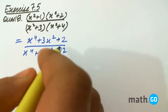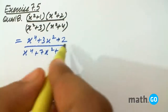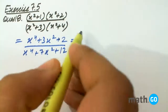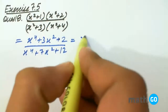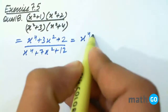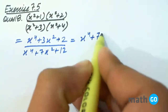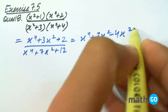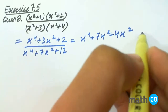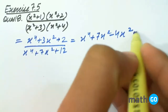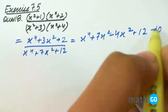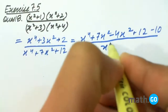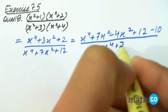Now, we try to express the numerator as the denominator. So it will be like x to the power 4 plus 7x squared minus 4x squared plus 12 minus 10 upon the denominator.